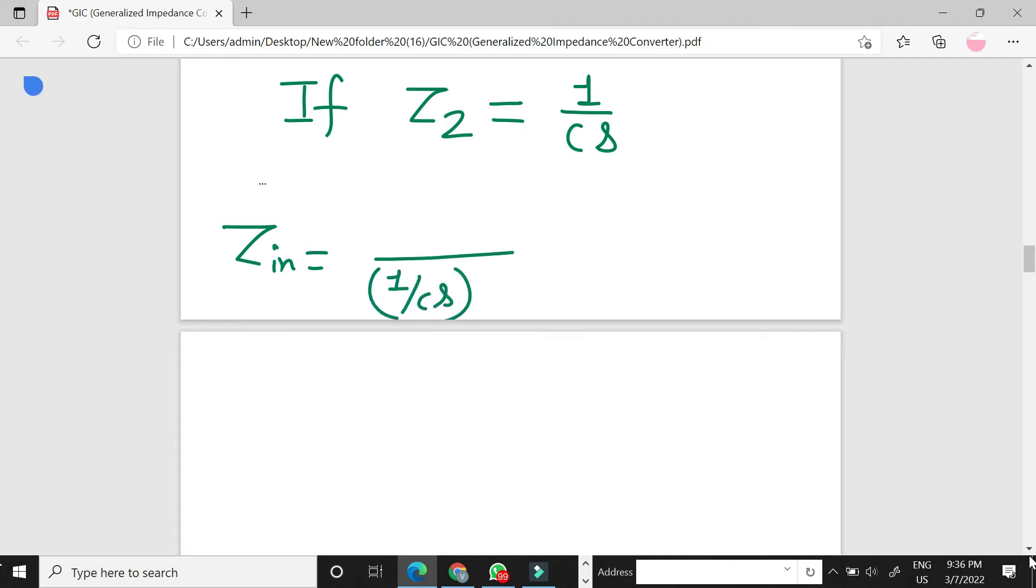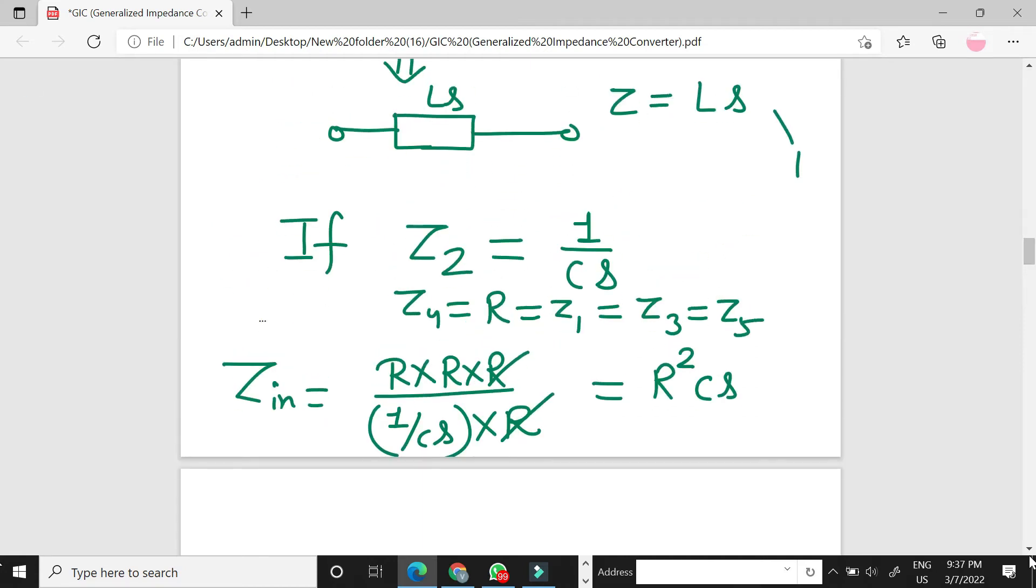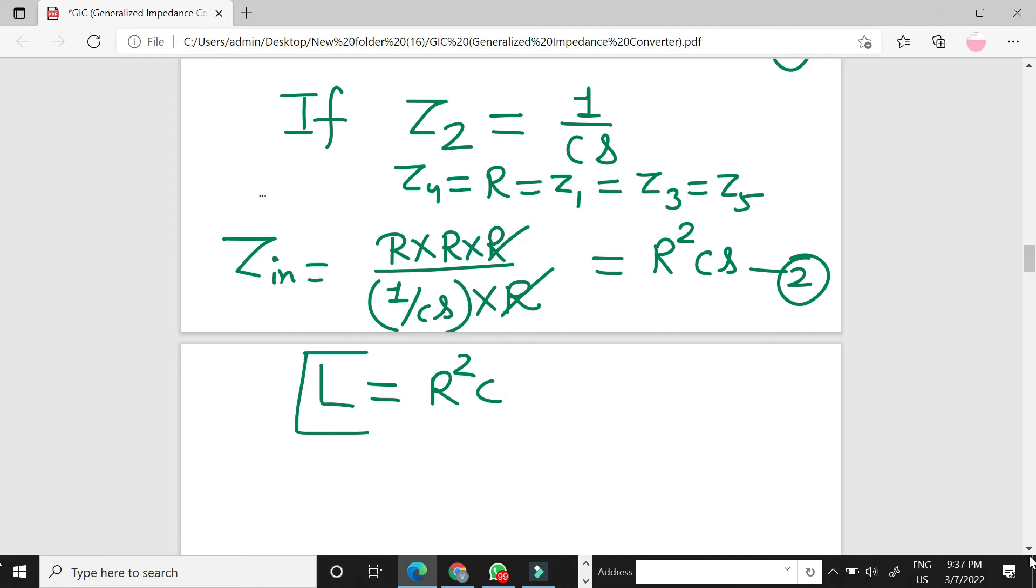Z4 R, Z1 R, Z3 R, Z5 R. So R into R into R into R, this is R square into CS. So if we compare equation number 1 and equation number 2, we get the value of inductance is L is equal to R square C. This is the concept of inductance simulator.